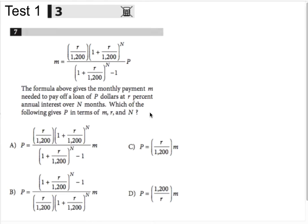So now let's read this. The formula above gives the monthly payment M needed to pay off a loan of P dollars at R percent annual interest over N months. Which of the following gives P in terms of M, R, and N?